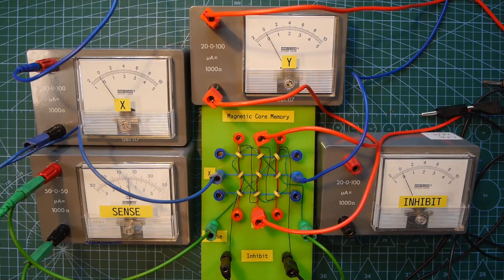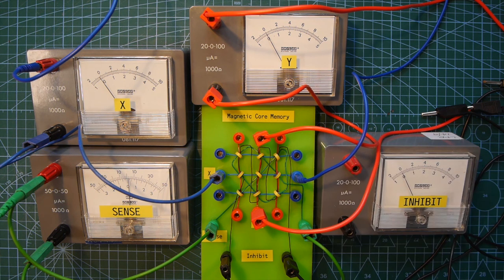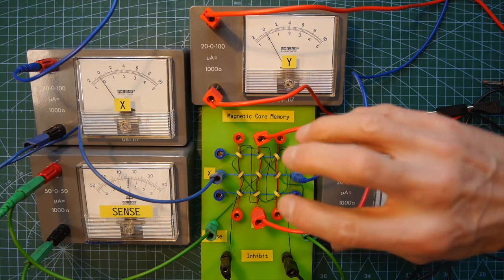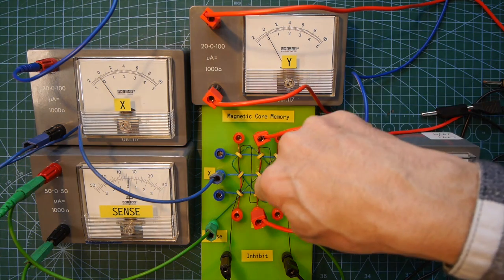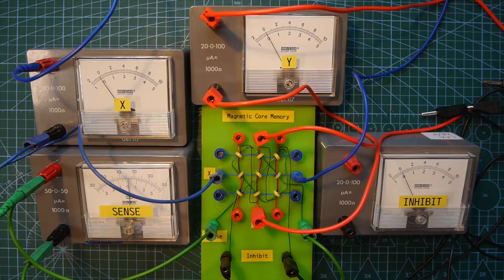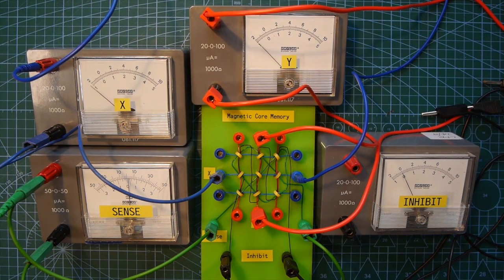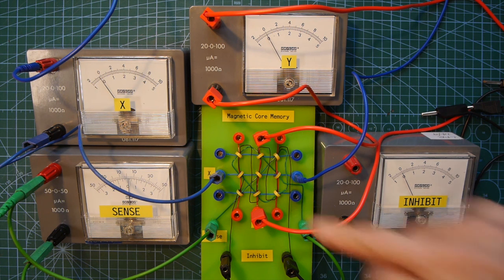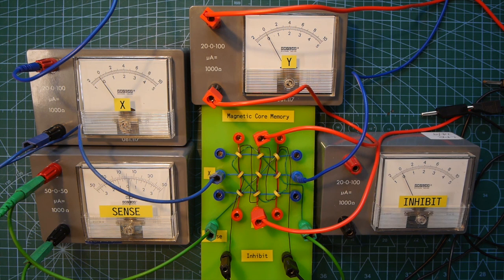So if you remember, we've read the one bit of data in there, but we've read it by turning it back to a zero. So we've now got to rewrite that data so it remains in memory because reading data is a destructive process. So we've got to reverse the currents through this core and remagnetize it as a one. So watch these two meters, current in the opposite direction. There we go. I've disconnected the sense because we don't need to sense that. But now we've remagnetized this central core back to a one. So that data is now back in memory to be read again at a later stage.